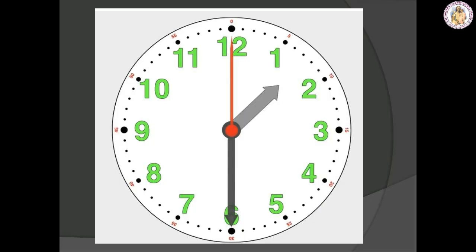If you want to know the time, we will see it on a clock or in a watch. First, we are going to see a clock. In a clock, we have 12 numbers starting from 1, and it has 3 hands. Let us know what the 3 hands denote.